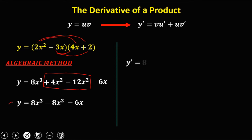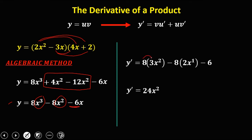Now find the derivative of the simplified expression. y prime: 8 times the derivative of x cubed is 3x squared, giving 24x squared. Minus 8 times the derivative of x squared is 2x, giving negative 16x. The derivative of negative 6x is negative 6. So y prime equals 24x squared minus 16x minus 6.